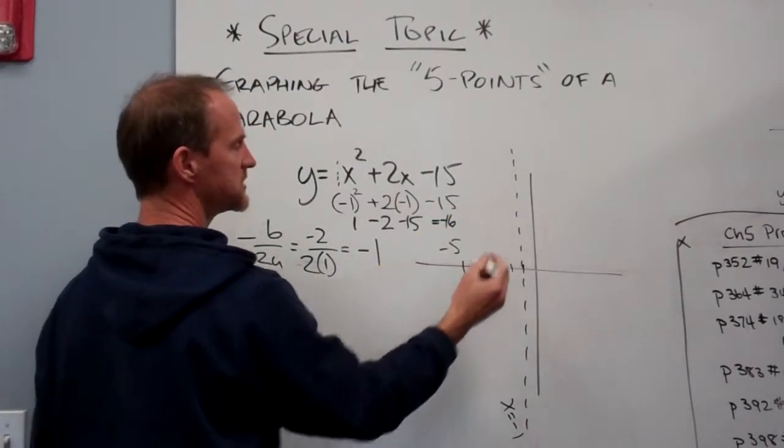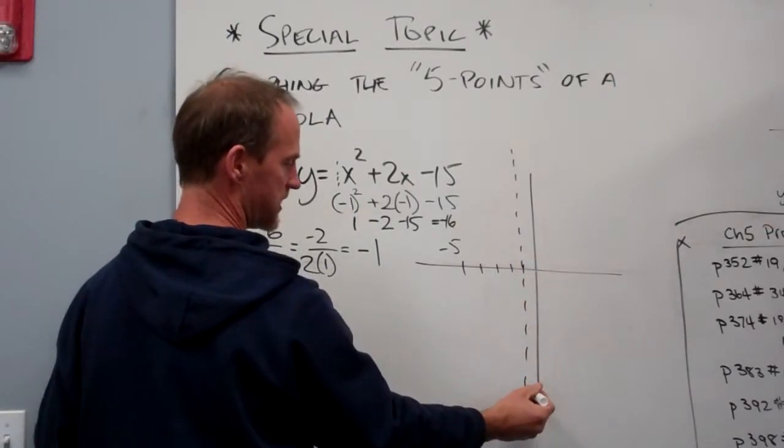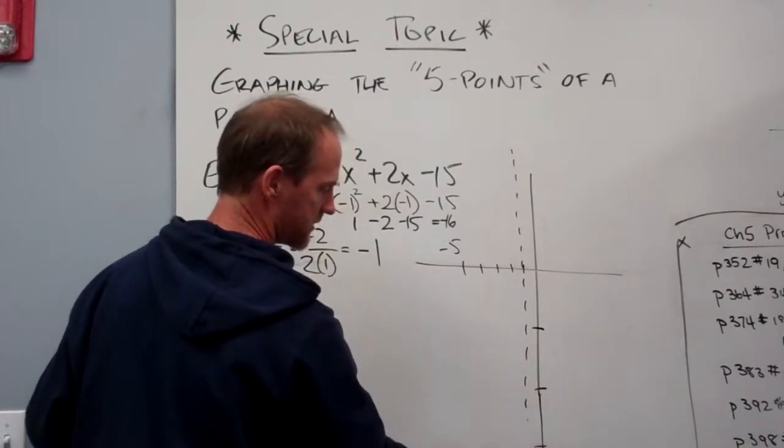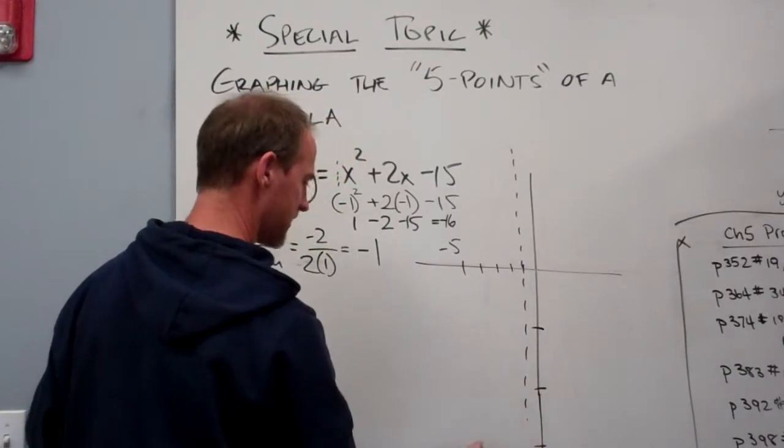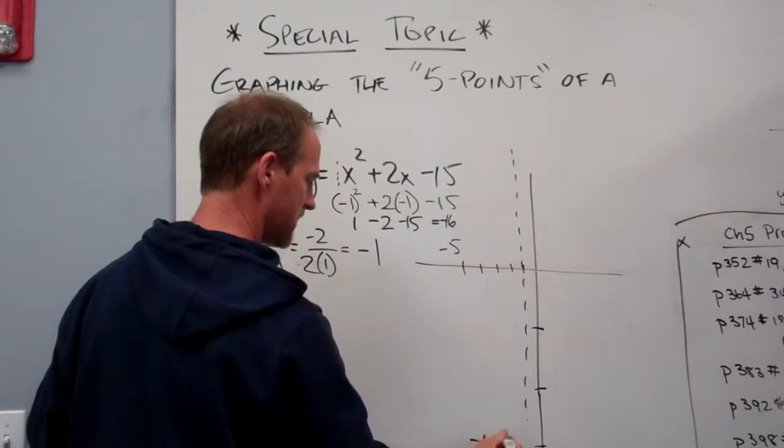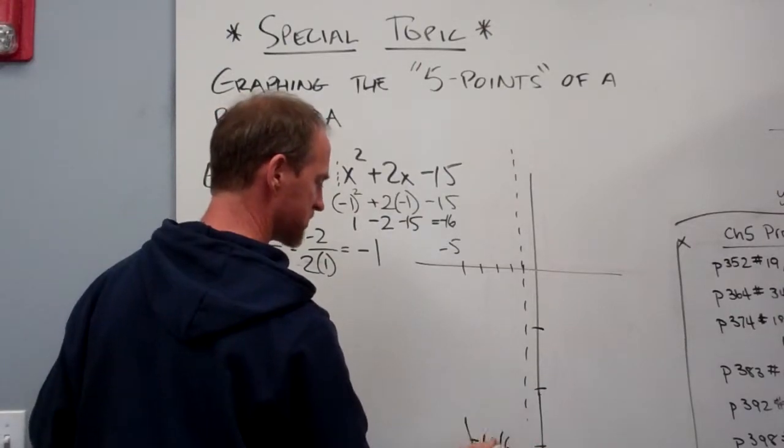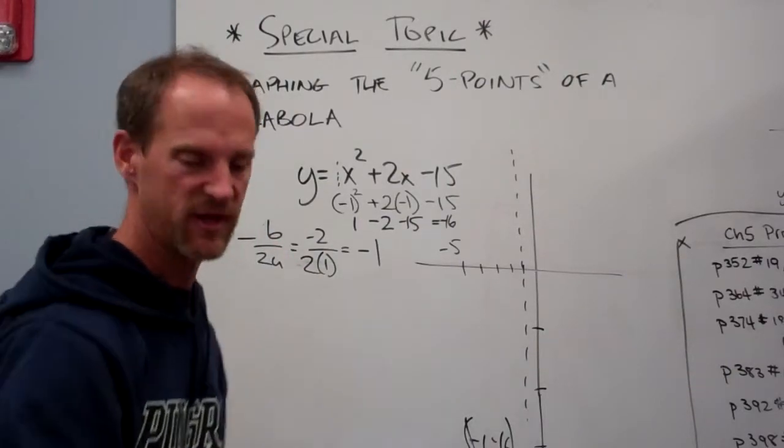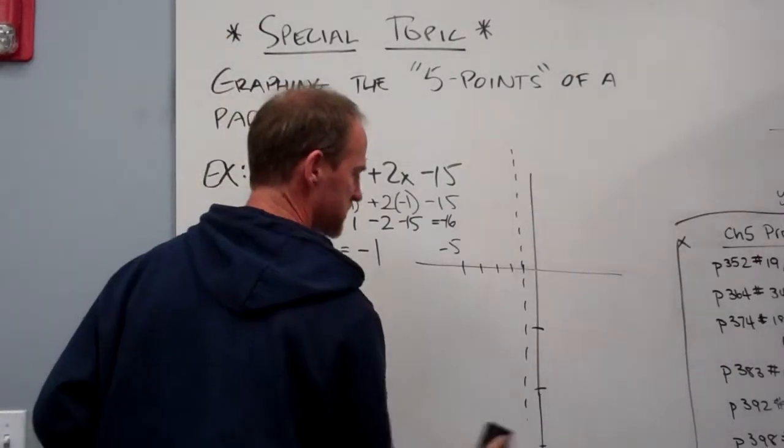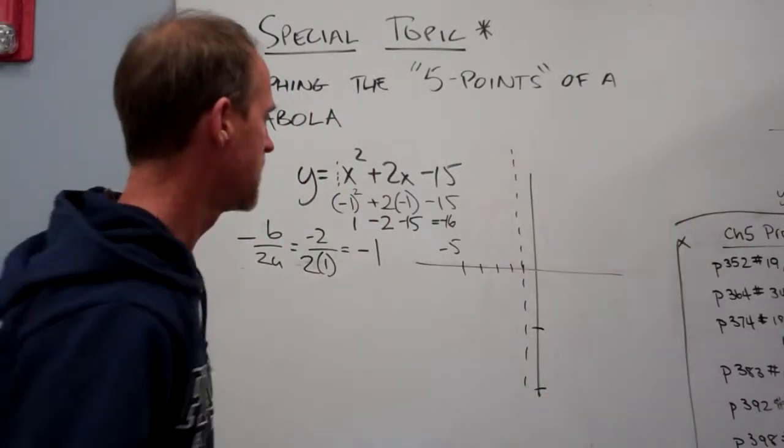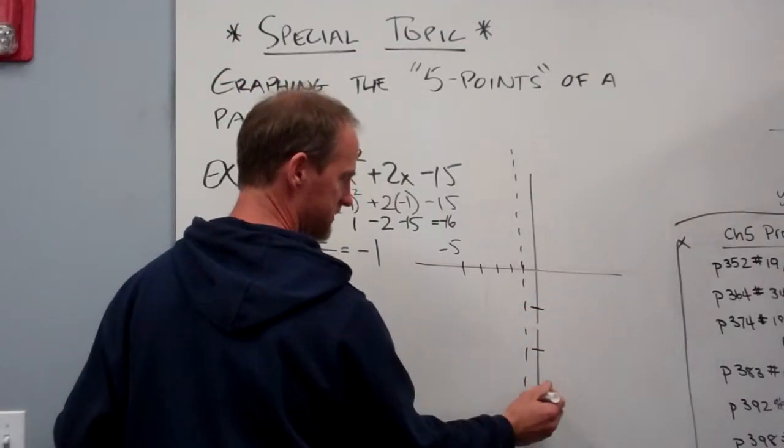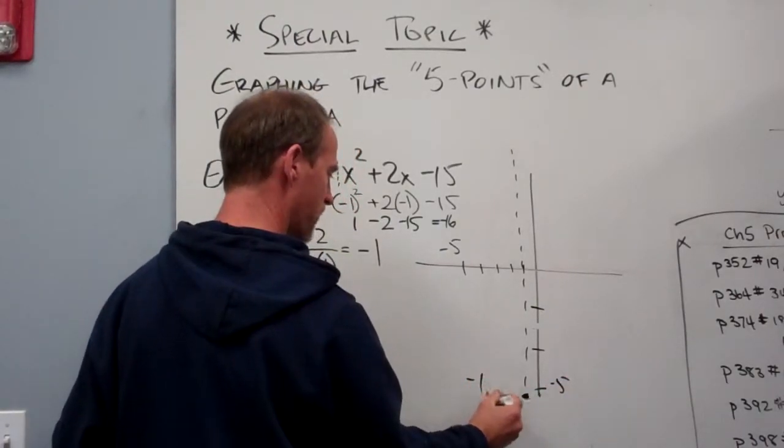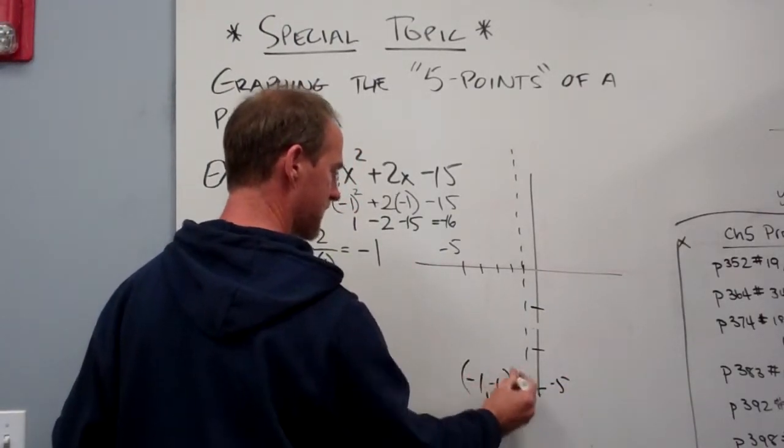There we go. So then this vertex point is way down here. We'll go 5, 10, whoa, down here, negative 16 right there. Negative 1, negative 16. I hope that shows up on the camera. I'm going to cheat a little bit, I'm going to scrunch my axes just so that it does show up. Let's say that's negative 5, there's negative 10, there's negative 15, and there's negative 16. So negative 1, negative 16. That's my vertex.